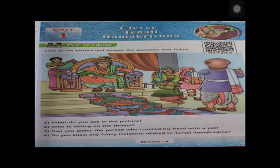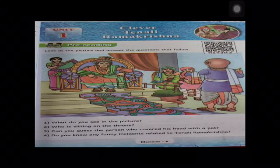Now here, you can look into the picture which is given. You can also answer the questions that follow. What is the picture that you are seeing? You can see a person sitting on a throne, two persons sitting there along with the king, and a funny man who has put a pot on his head — how funny it looks!